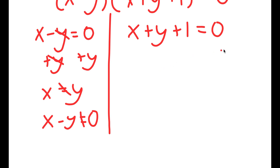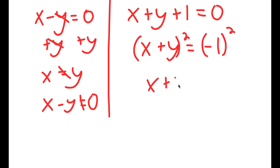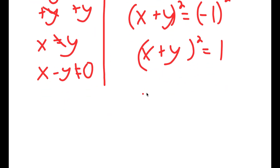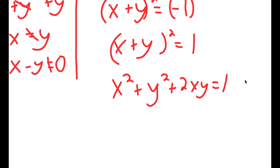So I have x plus y plus 1 equals 0, meaning x plus y equals negative 1. If I square both sides, I get (x plus y) squared equals 1. And (x plus y) squared expands to x squared plus y squared plus 2xy. This will be equation 3 of my system.